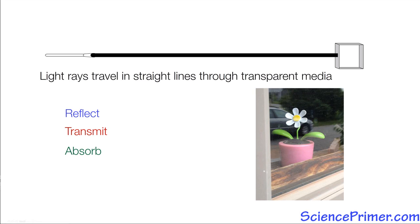So in a simple picture like this, we can see the complex behavior of light. And there are even things going on that we can't see, including light reflecting off the flower inside, hitting the glass and reflecting back into the room. To see those reflected light rays, we would have to go around into the room and look for a reflection of the flower in the window.